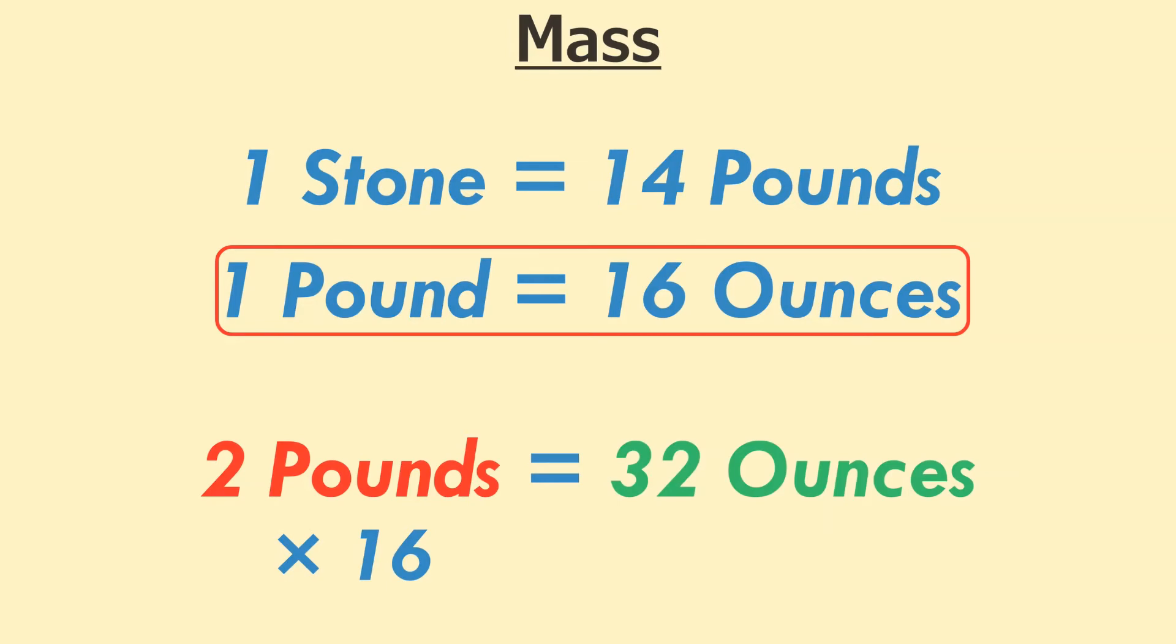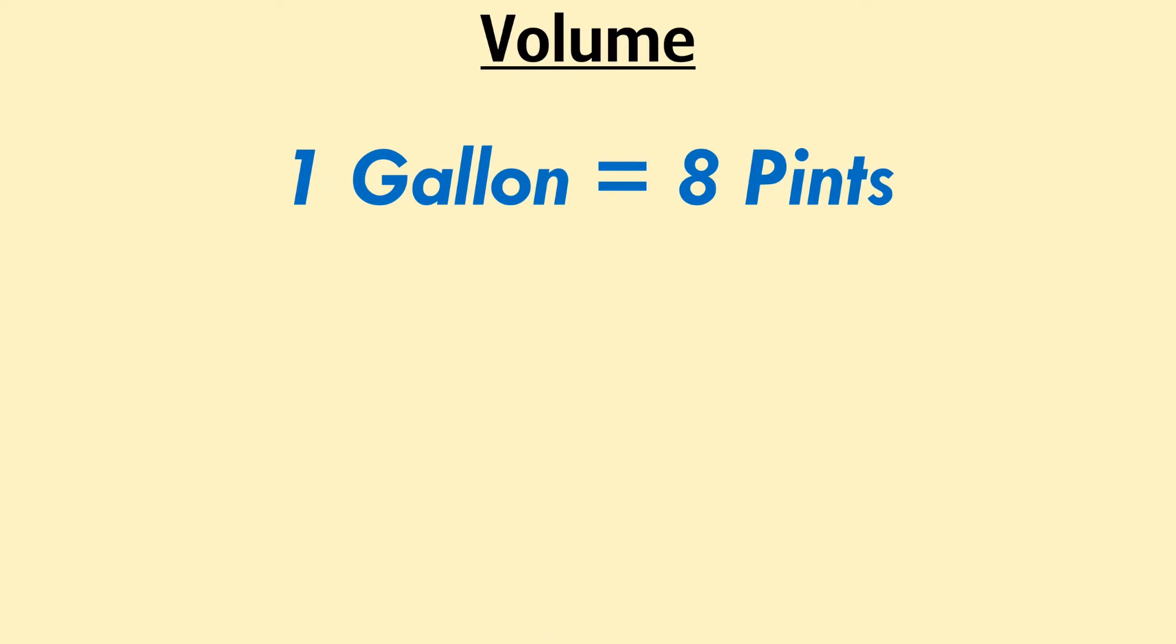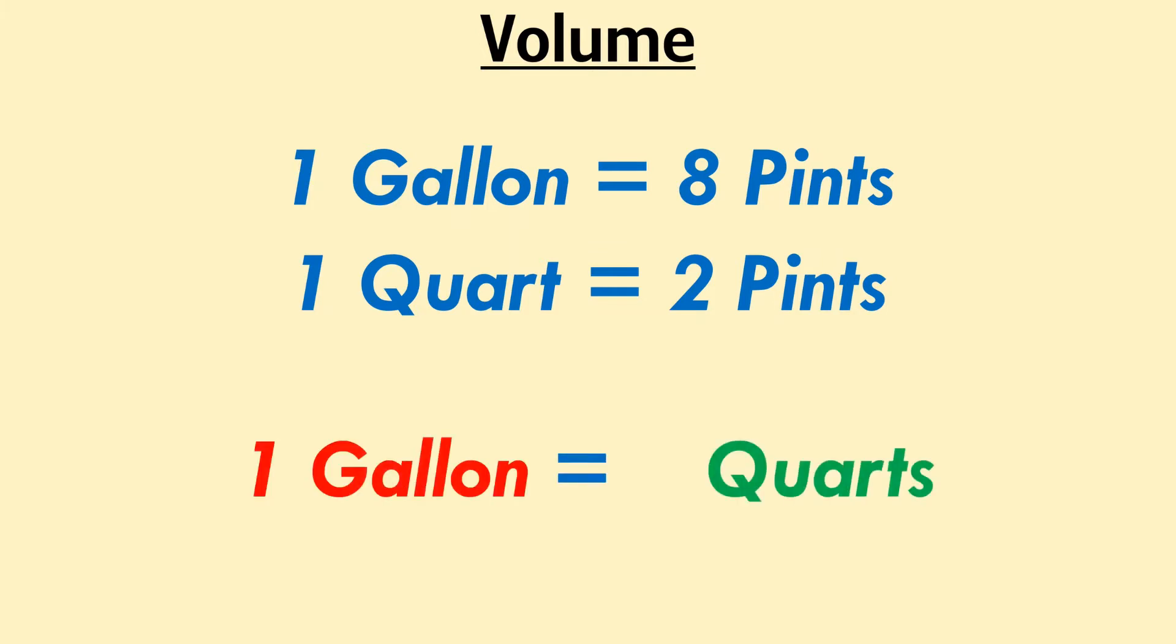Finally, the last set of units we'll look at is about volume. 1 gallon is 8 pints. 1 quart is 2 pints. How many quarts are there in 1 gallon? Well, each quart is 2 pints, and 1 gallon is 8 pints. 8 divided by 2 is 4. 4 multiplied by 1 is 4. 4 quarts is the answer.